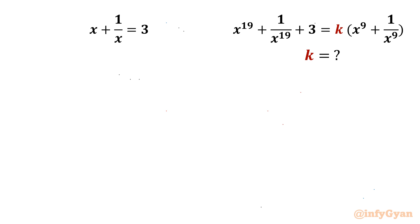Welcome back to Infigyan, my dear friends. In this video, we will be solving another very interesting and challenging question from algebra. We have two equations: x plus 1 over x is equal to 3, and x power 19 plus 1 over x power 19 plus 3 equals k times x power 9 plus 1 over x power 9. We have to find the value of k.